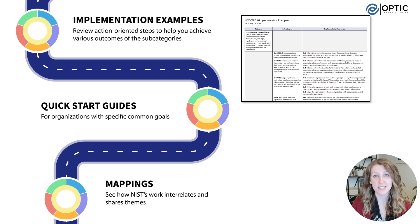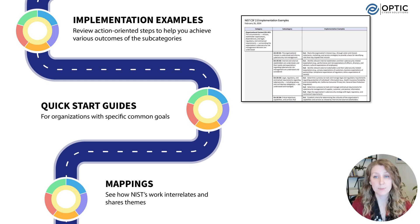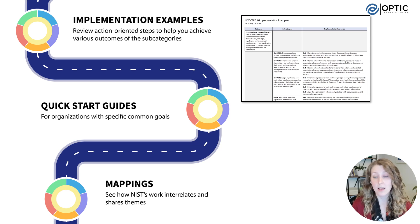First, I wanted to highlight the implementation examples. These provide examples of how organizations can apply the CSF in practice, giving you a clearer picture of what implementation looks like. They aren't designed for any specific industry or company, but serve as a helpful reference to spark ideas and guide your approach. The examples break down the 106 subcategories across the framework and offer insights into how different security measures align with the CSF outcomes. They can help give you an idea of what you should shoot for. While they don't prescribe exact steps, they do provide useful ideas to start with, and you can adapt them to your company.